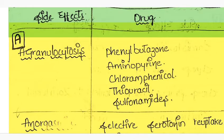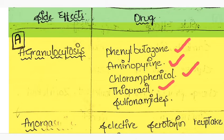Agranulocytosis is the major side effect for phenylbutazone, aminopyrine, chloramphenicol, thioureas, and sulfonamides.